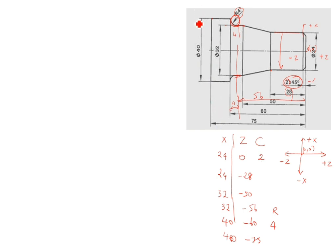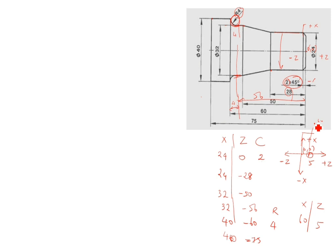After that, up to here is 40 and the tool moves outside. You can write X as 50 or 60, no issue. Z is minus 75 up to here, so Z 5 means the tool comes out here. You can write 65 or 55, whatever it is, no issue. Now we go with the program.